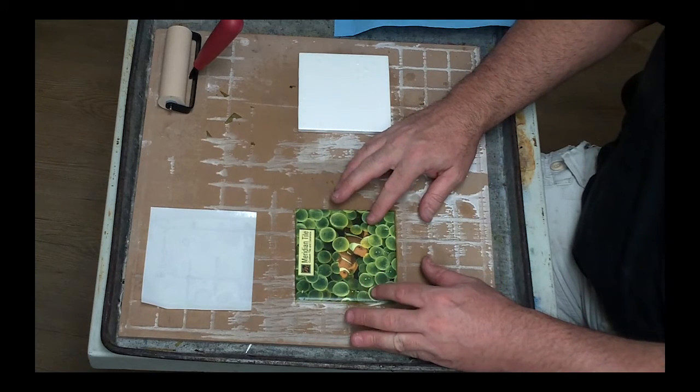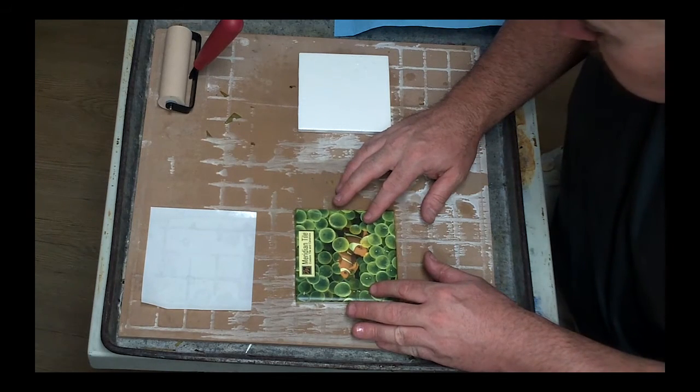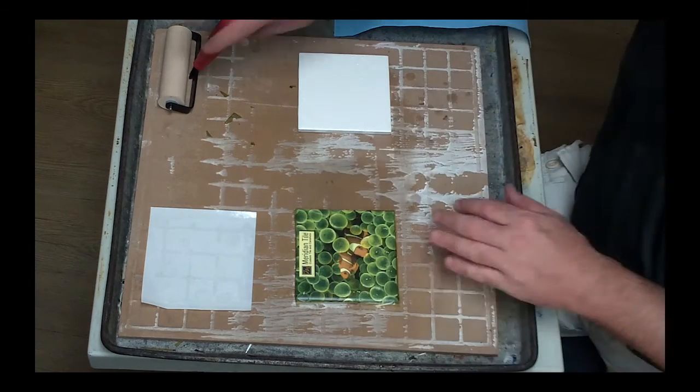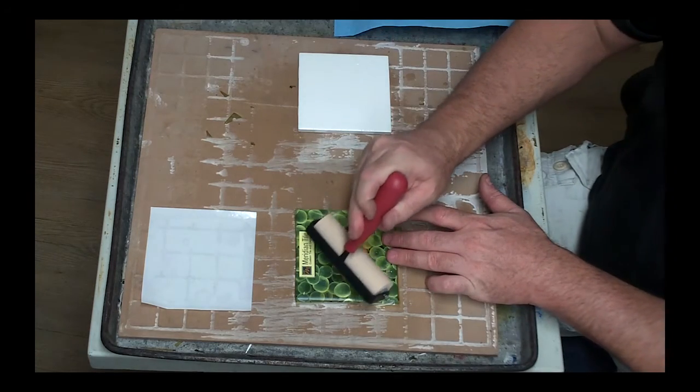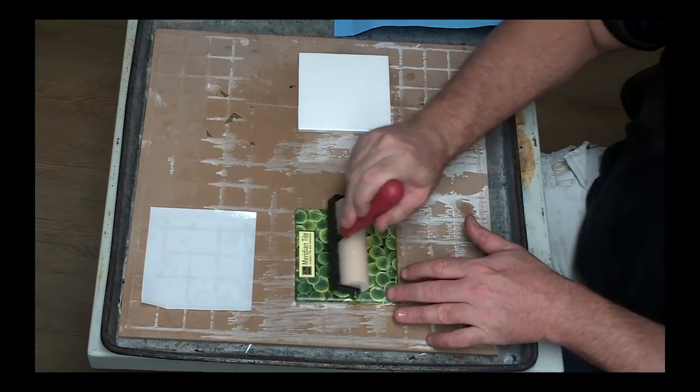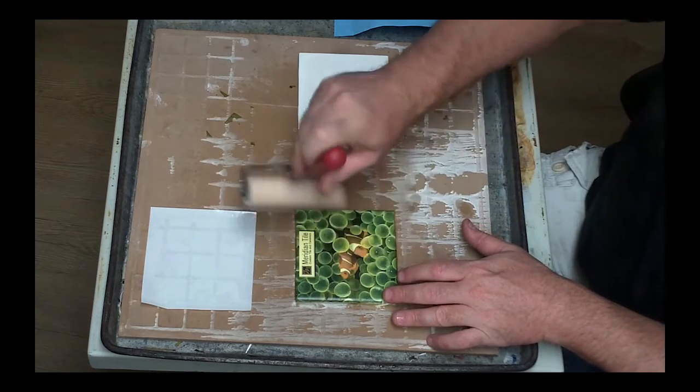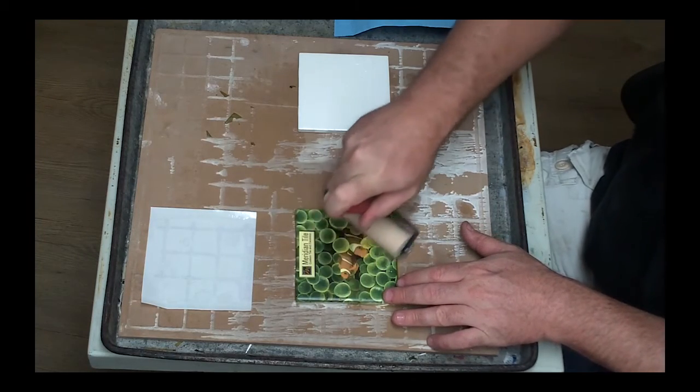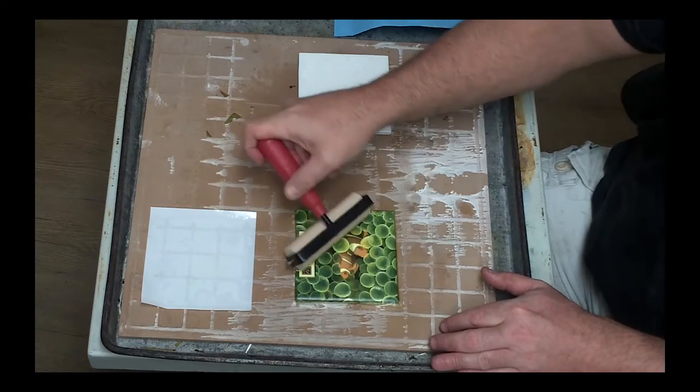So now we're going to center it. Once you get that guy centered we're going to take our roller and we're going to go from the middle out and this is going to tack the decal down to the tile. You want to be very careful. You want to get all the water and all the air out.